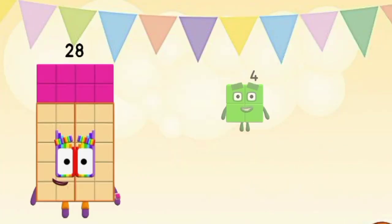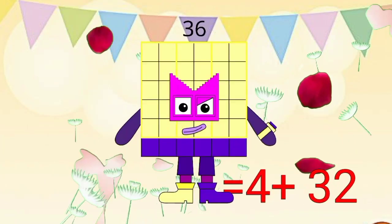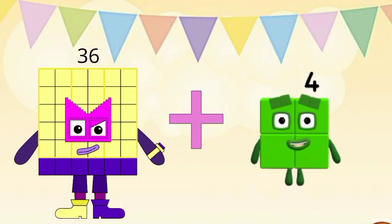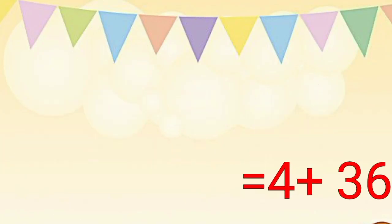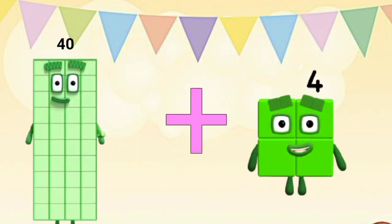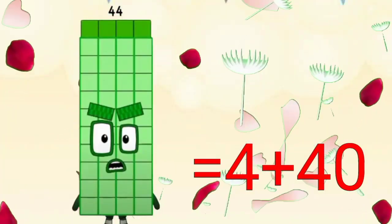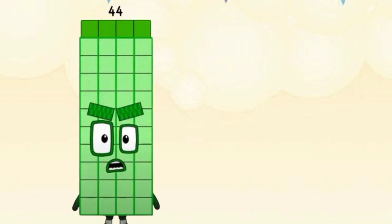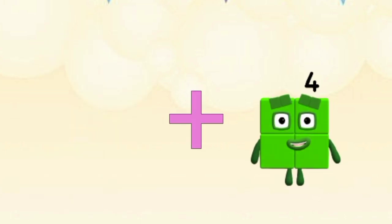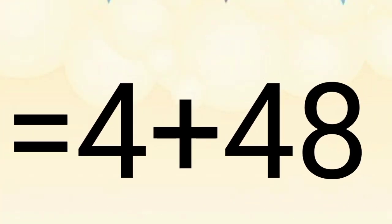Twenty-eight plus four equal to thirty-two. Thirty-two plus four equal to thirty-six. Thirty-six plus four equal to forty. Forty plus four equal to forty-four. Forty-four plus four equal to forty-eight. Forty-eight plus four equal to fifty-two.